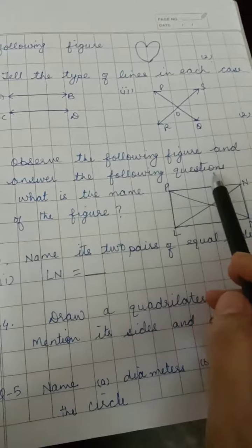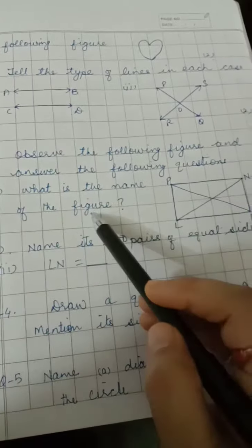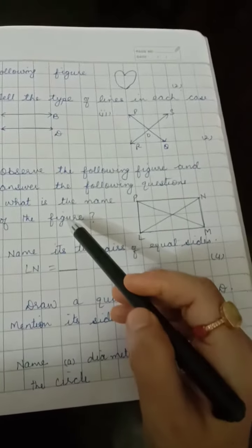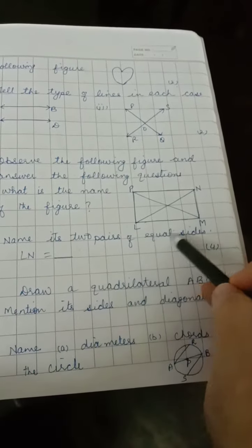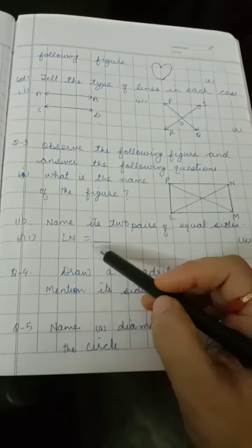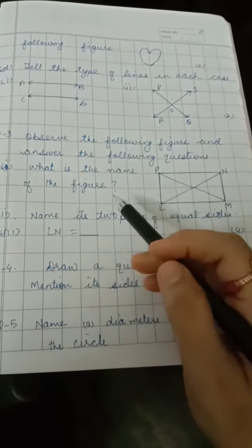Question 3: Observe the following figure and answer the following questions. A: What is the name of the figure? B: Name the two parts of equal sides. C: LN is equal to ___.